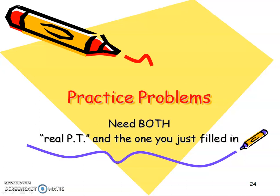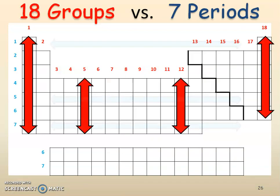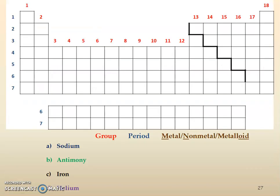For your practice problems, you're going to need both a real periodic table that has element symbols and names — whether mine or one found online — and the one you just filled in to classify elements. As a reminder: groups go up and down like columns, and periods go across left and right like you're reading a sentence. We're going to find elements, figure out their group number, their period number, and decide what classification they are: metals, non-metals, or metalloids.